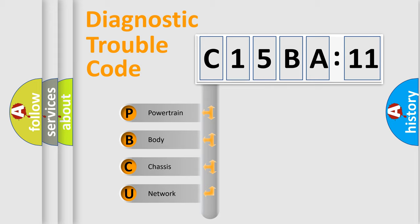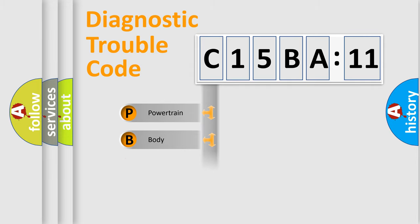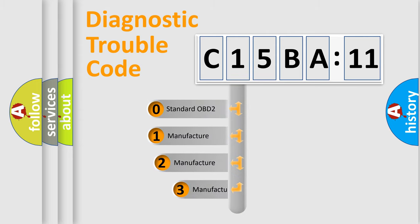We divide the electric system of automobile into the four basic units: Powertrain, Body, Chassis, Network. This distribution is defined in the first character code.